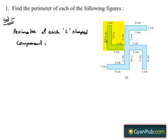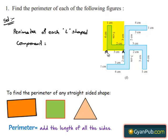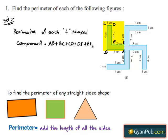To find this, let us denote the vertices of each L-shaped component with A, B, C, D, E, and F. The perimeter of this L-shaped component is nothing but the sum of the sides, that is AB plus BC plus CD plus DE plus EF plus FA, which is 2 cm.